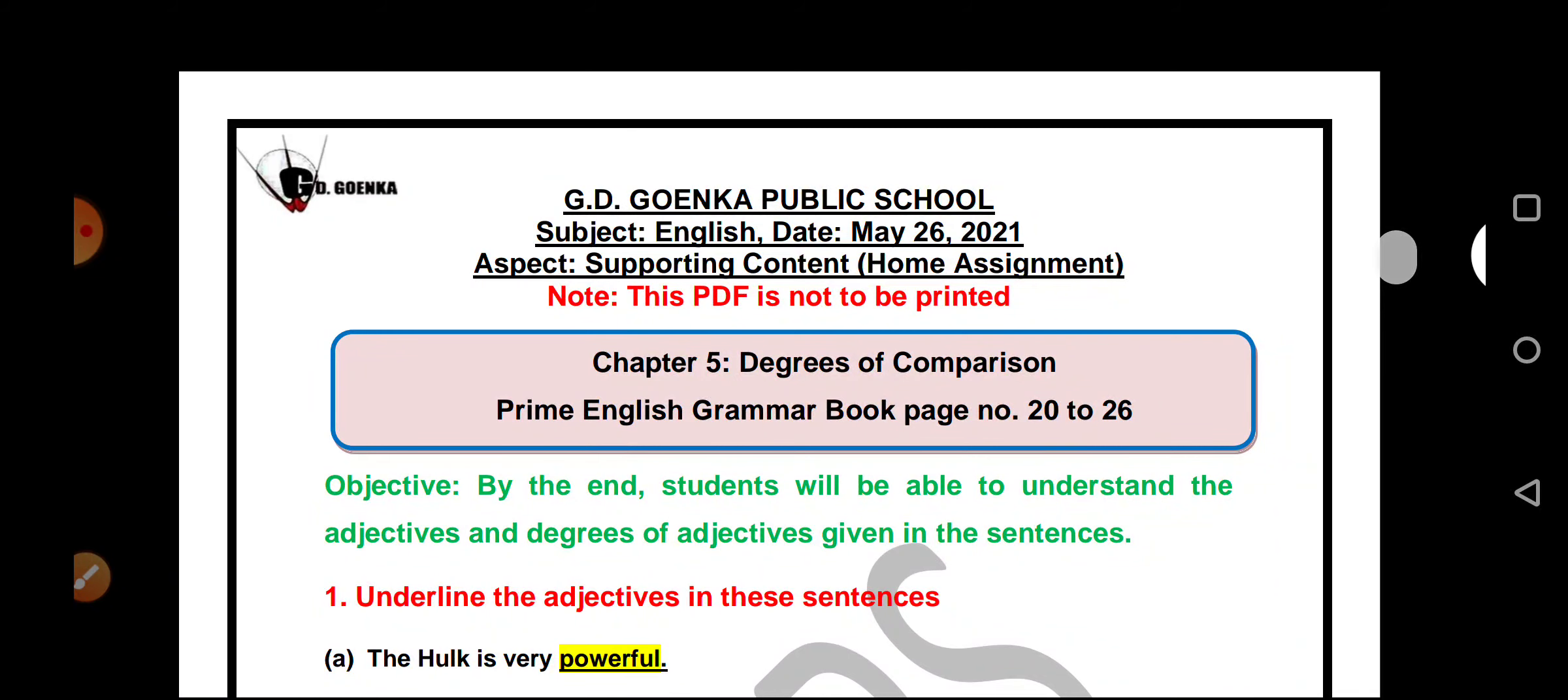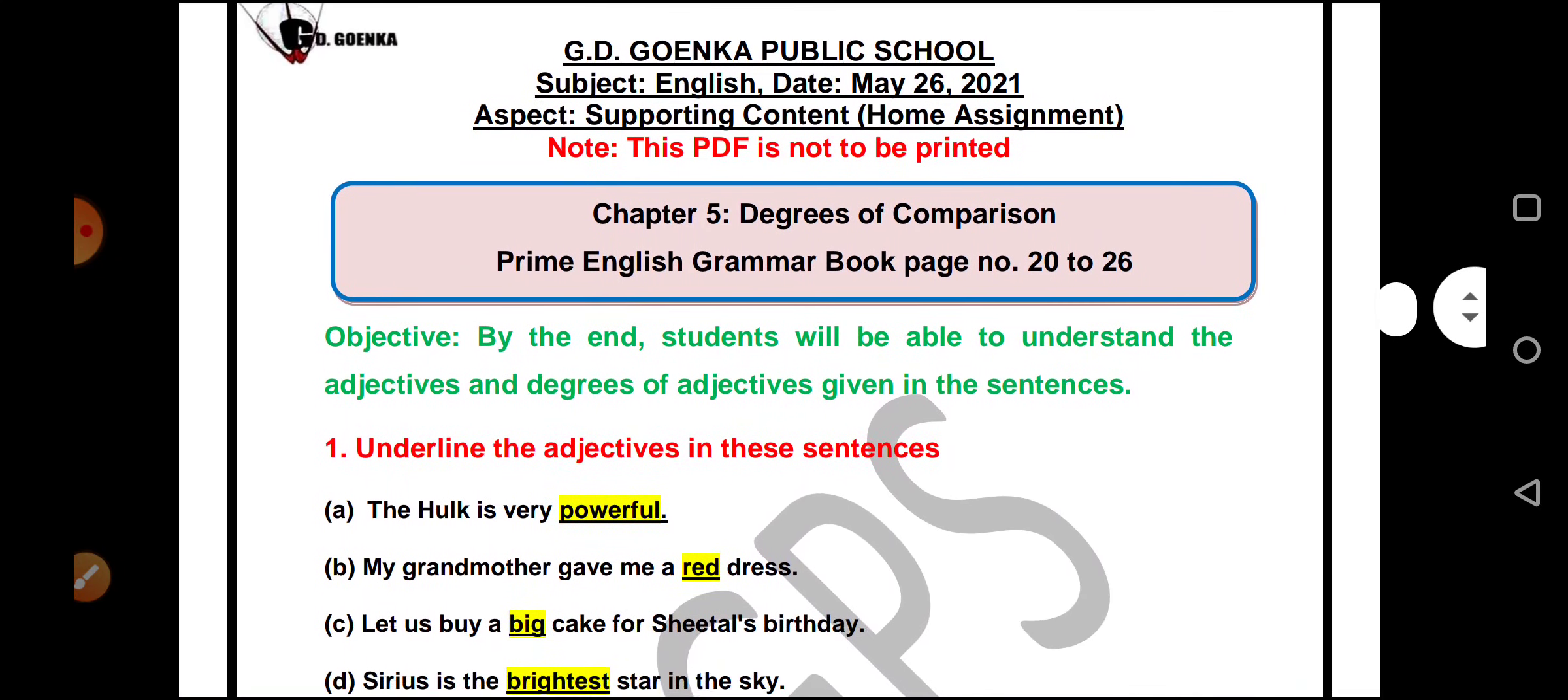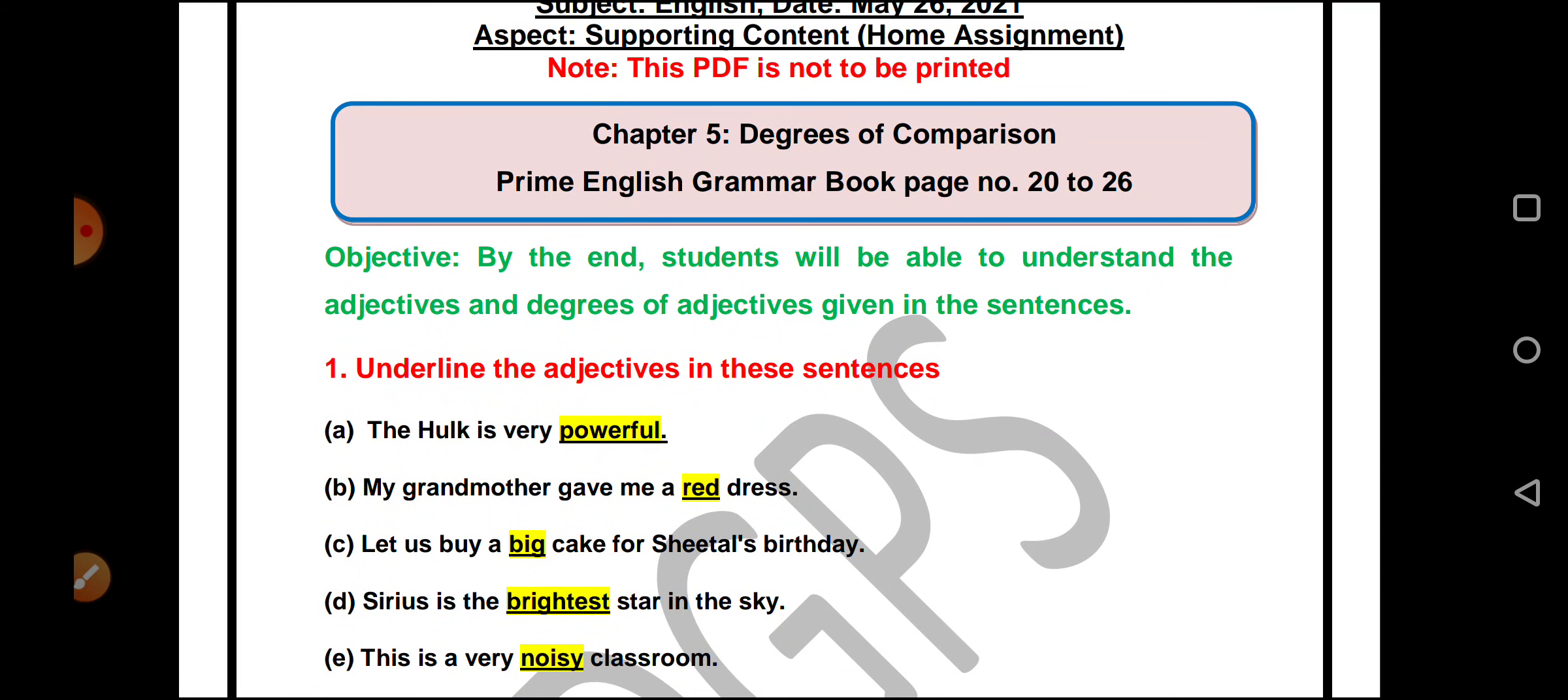After knowing what are the three types of degrees of comparison, now let us try answering the questions given below. The first says, underline the adjective in these sentences.